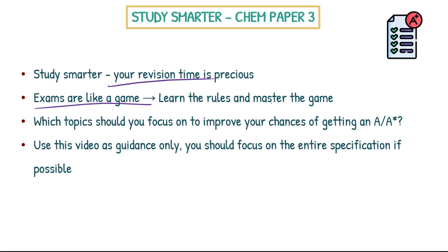Remember, exams are like a game. If you learn the rules to the game, you master the game. The rules are in the examiner's report, specification, mark scheme, stuff like that. But I've gone one step further. Which topics should you focus on to improve your chance of getting an A or an A-star? I am not a psychic wizard master guru — I can't predict the future. This is just looking for patterns, analyzing the mark schemes.